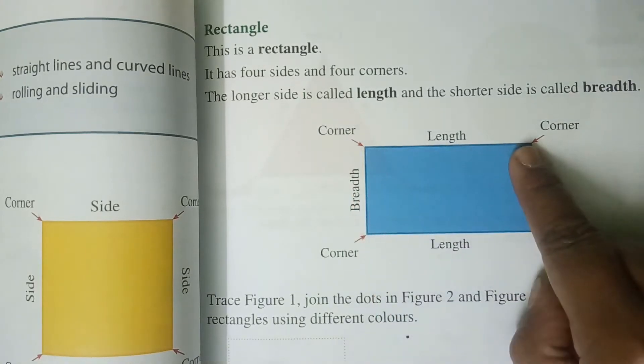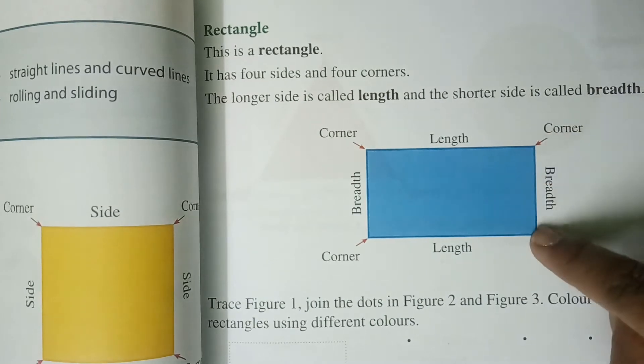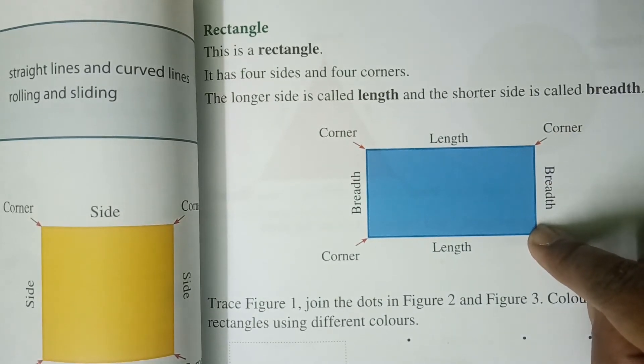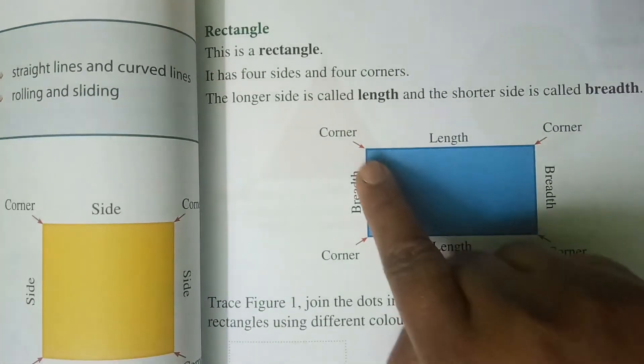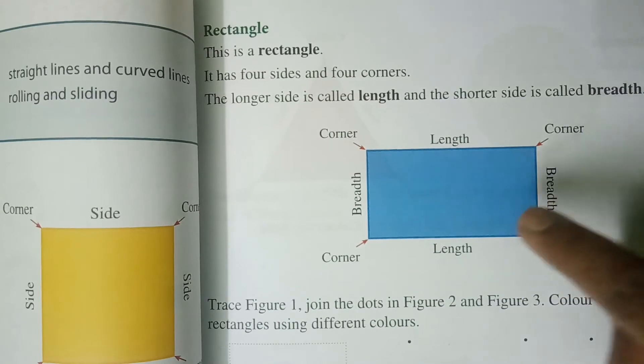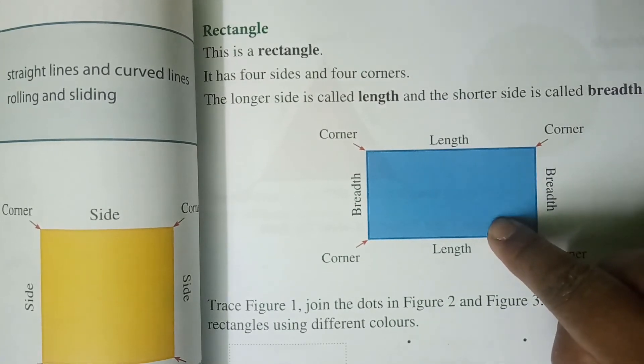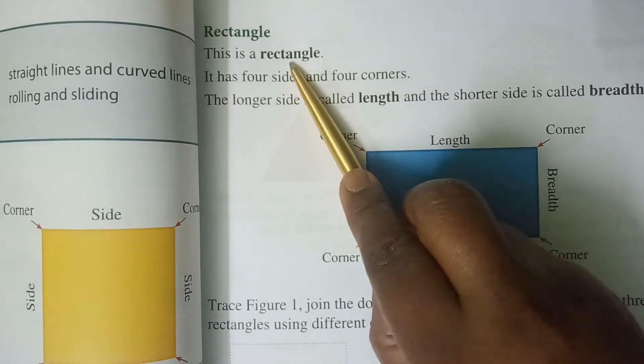The long side we call it as length. The shorter side we call it as breadth. So any shape, children, which has a long length and a small breadth, we call that type of object or shape as rectangular shape.